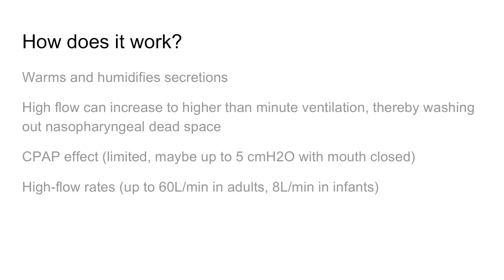So how does high flow work? It's not just blasting higher air — it works in a couple of ways. First, it warms and humidifies the air, which in turn warms and humidifies your secretions, which can decrease damage to the airway from dry air. Also, the high flow can be increased to higher than your minute ventilation. Normal minute ventilation is five to eight liters a minute, but if you're septic or have pneumonia, you'll have increased minute ventilation. If you're giving somebody two liters per minute by nasal cannula, they're breathing in a lot of room air and have a lot of dead space. By increasing flow above minute ventilation, you can wash out nasopharyngeal dead space, wash out CO2, and fill it with oxygen.